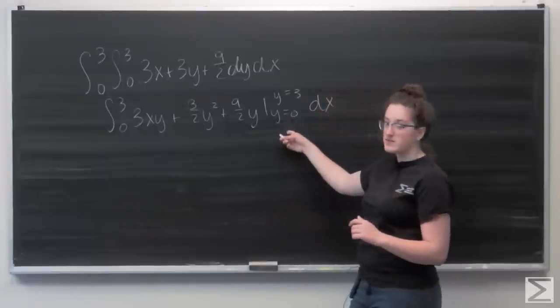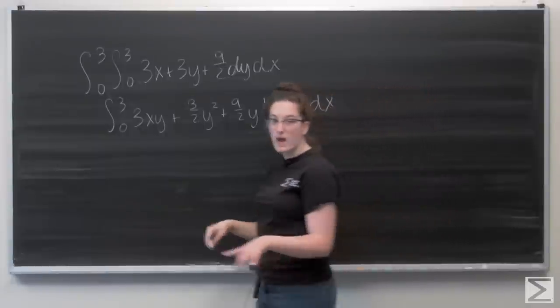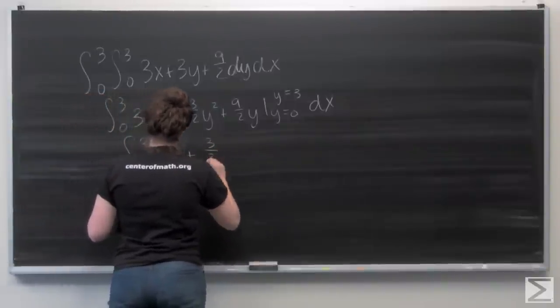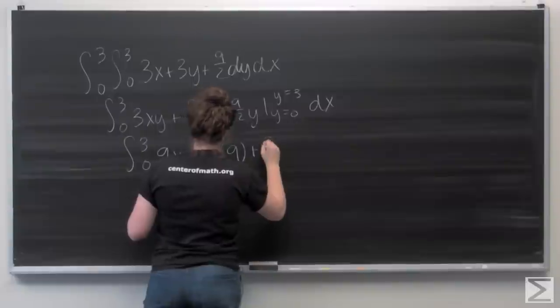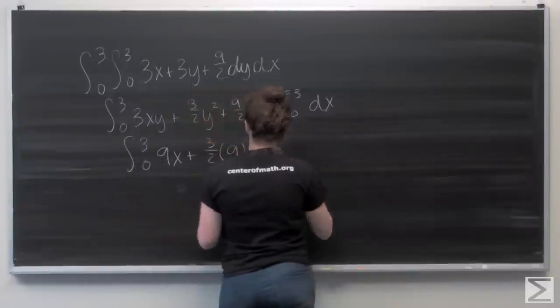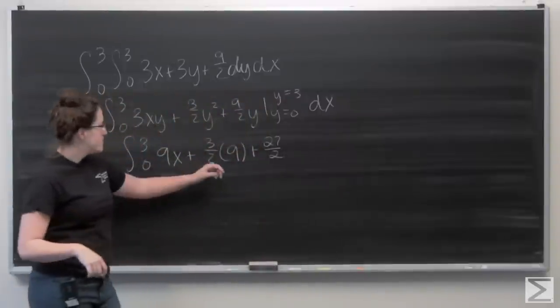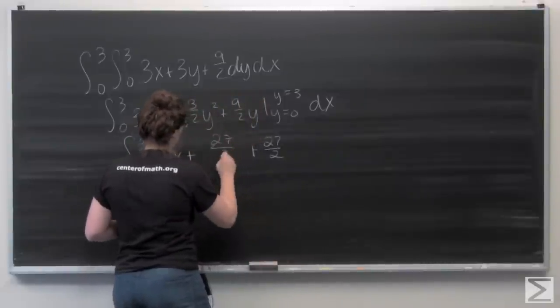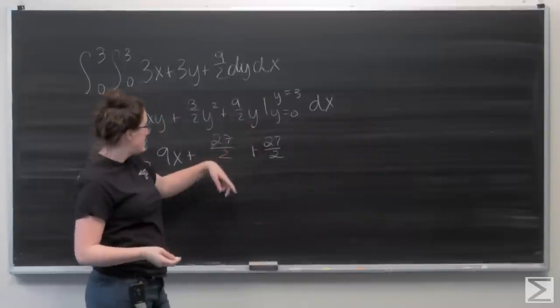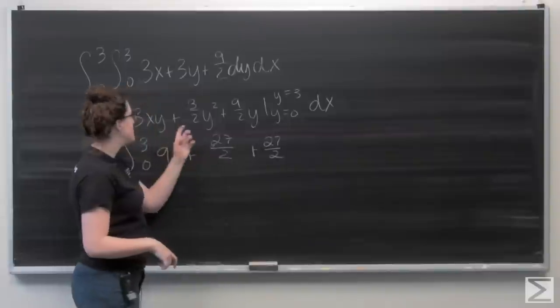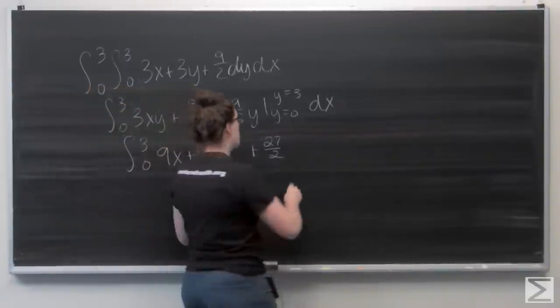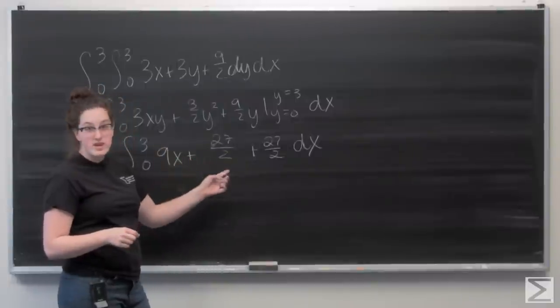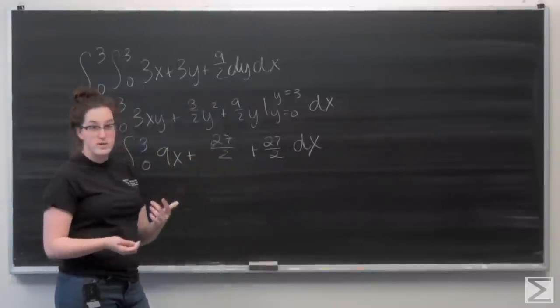And again, I'm going to evaluate from 0 to 3. So let's plug in a 3 everywhere I see a y. So I get 9x plus 3 halves times 9, which is 27 halves, plus 9 halves times 3, which again is 27 halves. And then when I plug in y equals 0, each of these terms has a factor of y, so they're all going to be 0. And let's go ahead and combine these fractions before I integrate with respect to x. So 27 halves plus itself, 4 times 2 is just going to be 27.